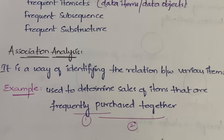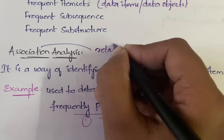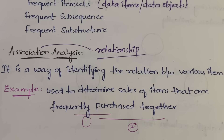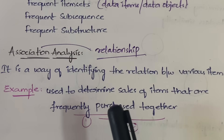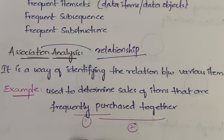Association analysis is a way of identifying the relationship between various items. If you are associated with something, you are somehow related to it. Here, association analysis tells us how data items are related to each other. A simple example: it is used to determine sales of items that are frequently purchased together.